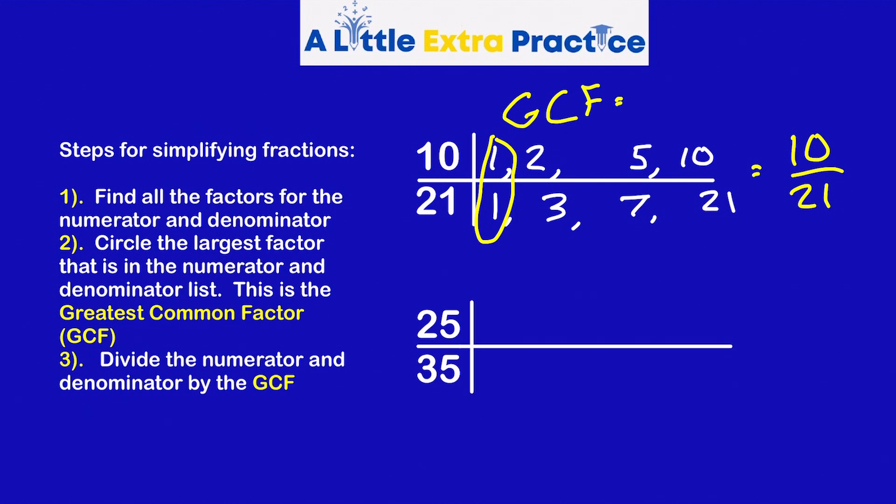25 out of 35. Step one: List all the factors. One times 25, five times five. Factors of 35: One times 35, five times seven. Common factors: They share one, they share a five. So the GCF is five.